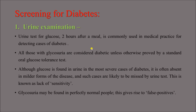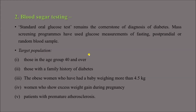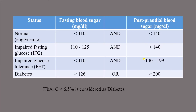The standard oral glucose tolerance test is the cornerstone of diagnosis of diabetes. The target population for screening ideally includes those in the age group of 40 and over, someone with a family history of diabetes, any obese woman who has had a baby weighing more than 4.5 kg (macrosomia suggesting the mother had diabetes during pregnancy), women who show excess weight gain during pregnancy, and patients with premature atherosclerosis.